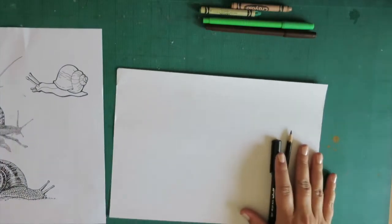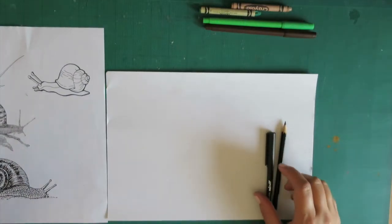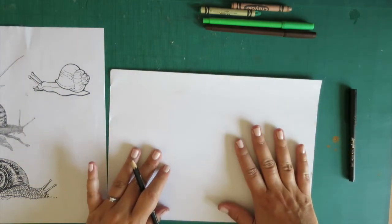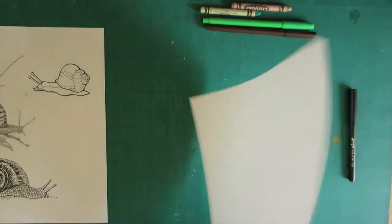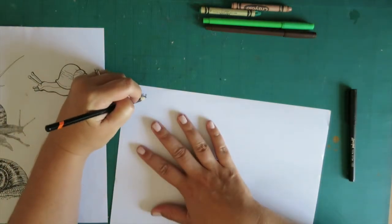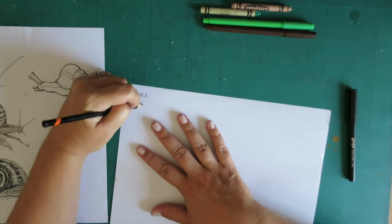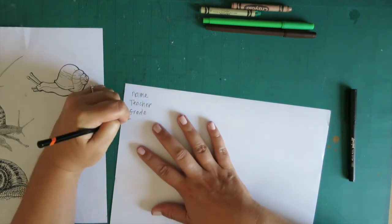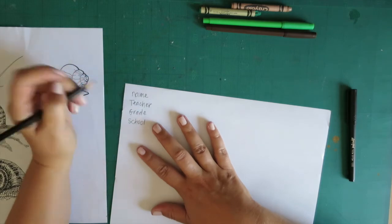You're going to decide what kind of shell you would like to do and take your piece of paper and a pencil. The first thing you always do is put your name, teacher, grade, and school on the back.